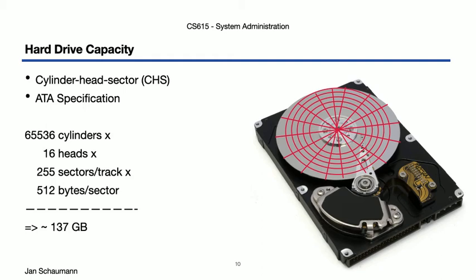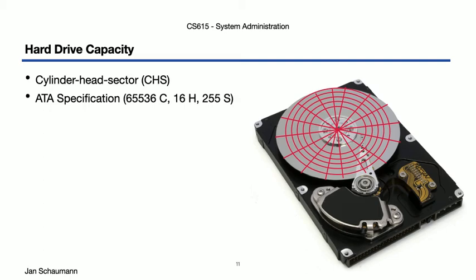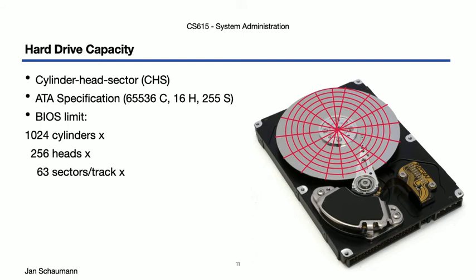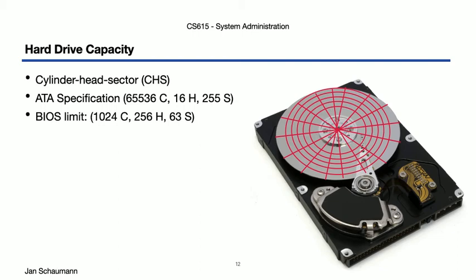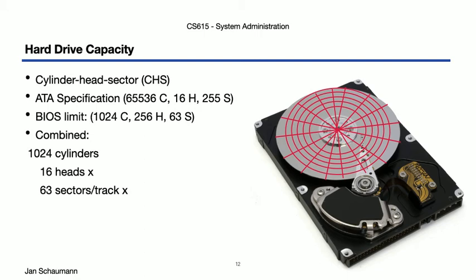Not too bad, but of course the problem was that the BIOS had a different limit. That is, early BIOSes could address 1024 cylinders, 256 heads, and 63 sectors per track, which, again at 512 bytes per sector, gave you a maximum disk size of approximately 8.5 GB. So that's pretty bad, but if you look at these two ways of limiting disk size, you actually have to use the lowest common denominator, and thus have only 1024 cylinders from the BIOS limit, 16 heads from the ATA definition, and 63 sectors per track from the BIOS limit again, which gives you only 528 MB as the maximum size a disk could possibly address.